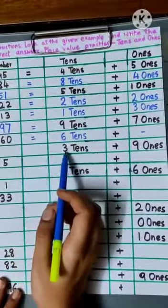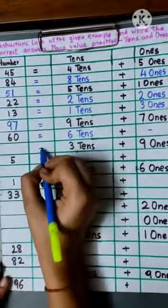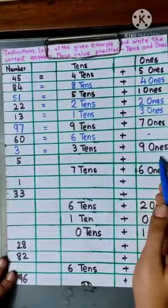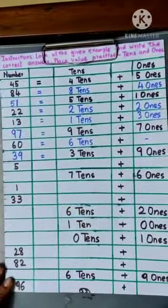Then there are 3 tens plus 9 ones. 3 tens means first number is 3, and 9 ones means the second number is 9. That is 39.